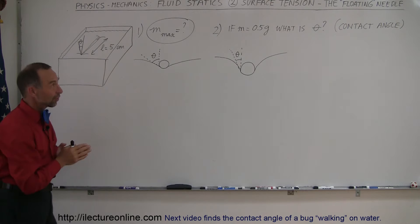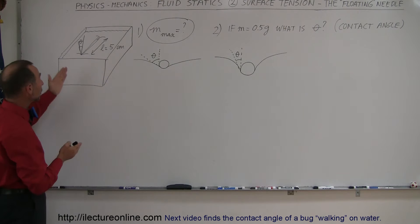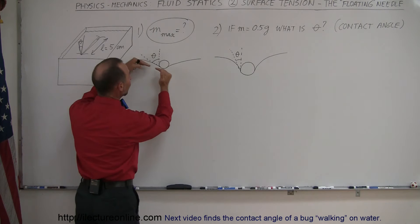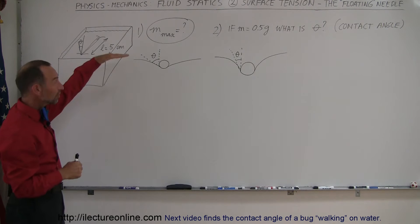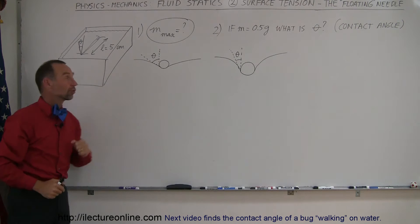Here's our second example of a problem dealing with surface tension — the floating needle. What is strange about surface tension is it appears that objects more dense than water can actually float on the surface. What's really happening is that the attractive forces of water molecules allow very small objects that don't have a lot of mass to be placed on top of the surface, and the surface tension caused by the mutual attraction of water molecules will actually uphold an object so it does not break through.